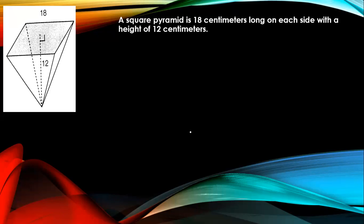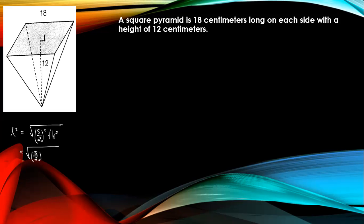First we need to calculate the slant height. The slant height equals the square root of the side divided by 2, squared, plus the height squared. The side here is referring to 18 centimeters, so 18 divided by 2, squared, plus the height, which is 12, squared.